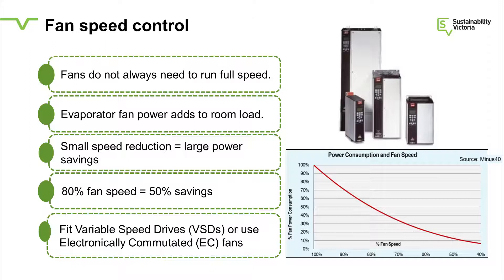Fan speed control is an exciting thing. The fans follow what we call the cubic law. That means the power consumed by a fan is proportional to the speed to the power of 3. So if you halve the speed that a fan is running at — which means you halve the amount of airflow — the power is 50% × 50% × 50%, which actually becomes 12.5%. So you get a dramatic reduction in fan power with a small reduction in speed.